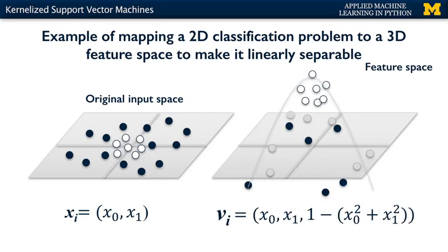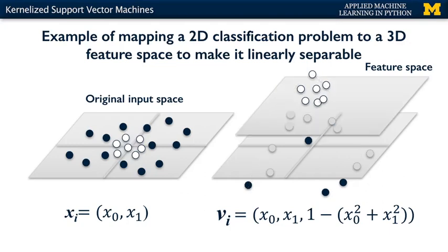But just as we did in the one-dimensional case, we can map each two-dimensional point (x0, x1) to a new three-dimensional point by adding a third feature, mathematically 1 minus x0 squared plus x1 squared. This transformation acts to shape the points into a paraboloid around (0, 0). The white points, since they're close to (0, 0), get mapped to points with higher vertical z values — that new third feature — that are close to 1. While the black points, which are farther from (0, 0), get mapped to points with z values that are either close to 0 or even negative. With this transformation, it makes it possible to find a hyperplane, say z equals 0.9, that now easily separates the white data points that are near z equals 1 from most or all of the black data points.